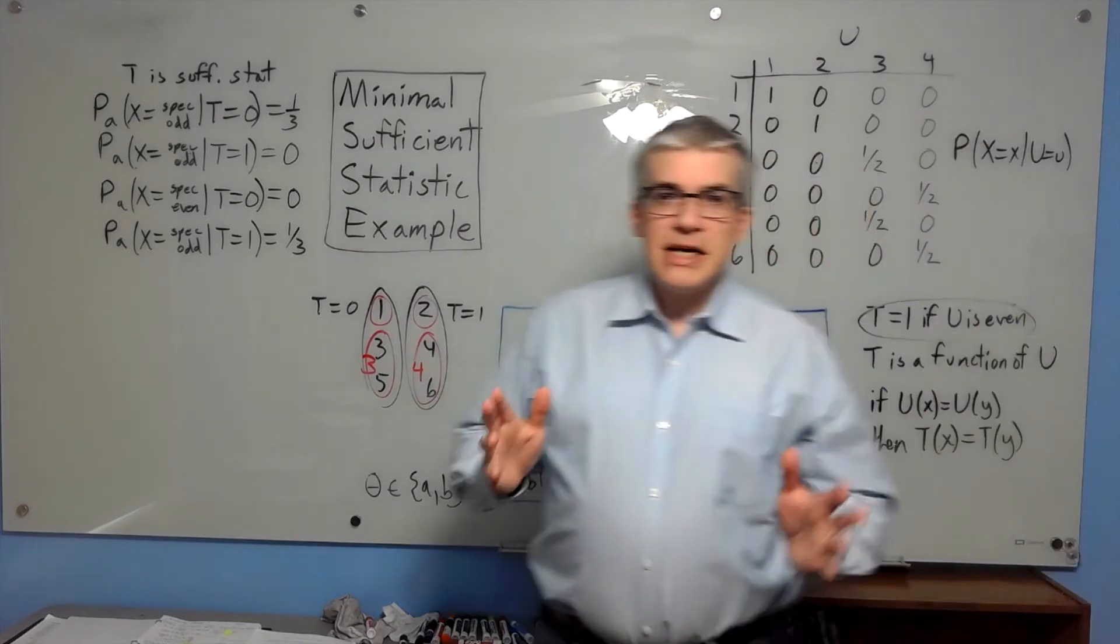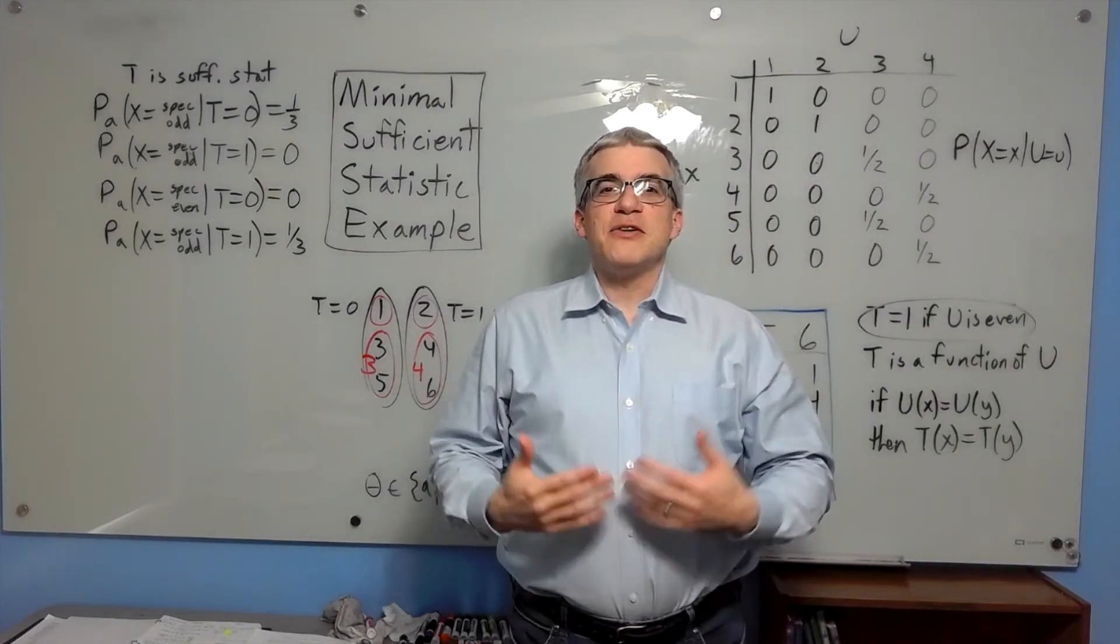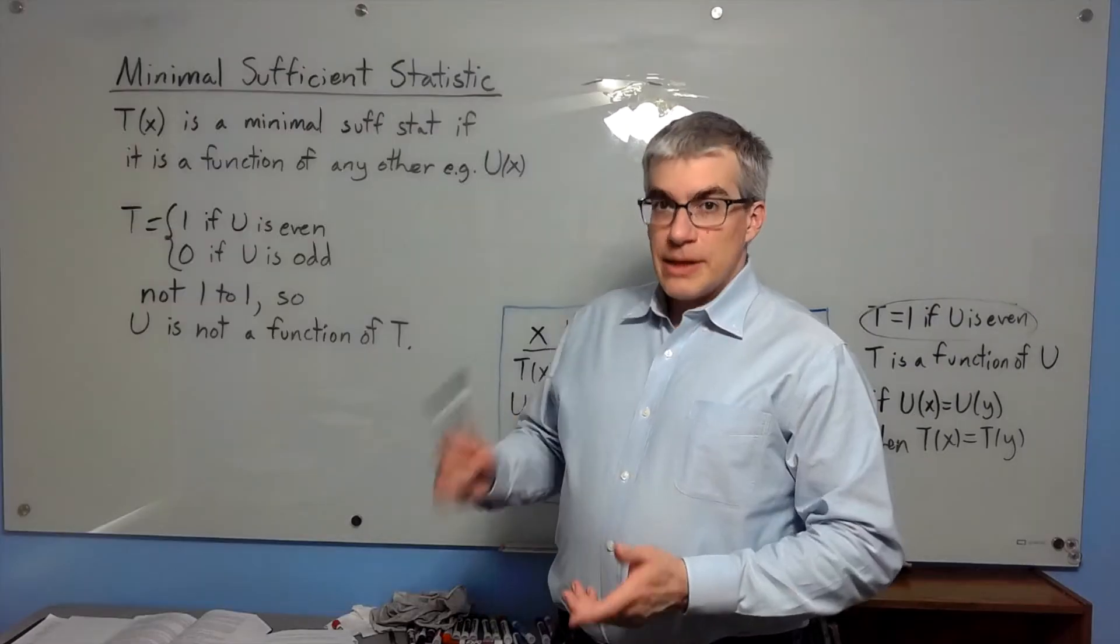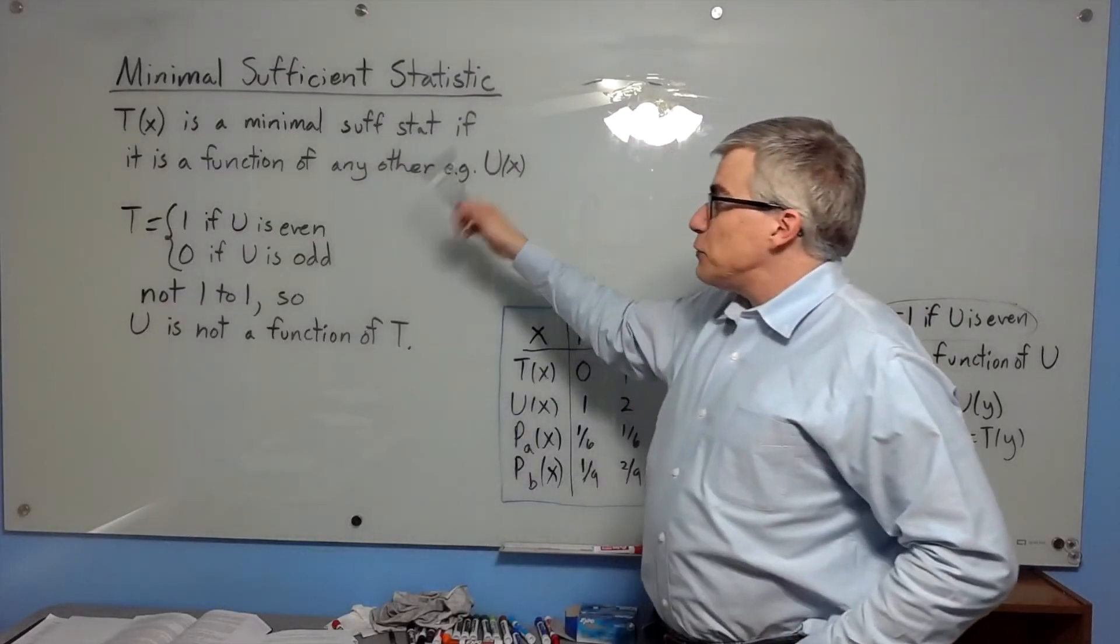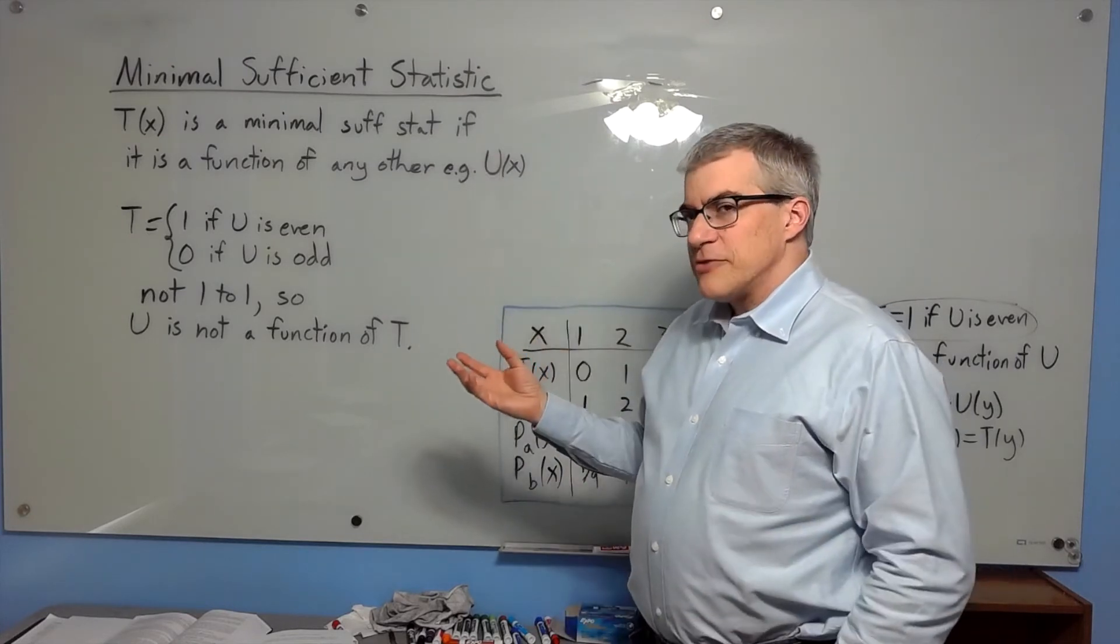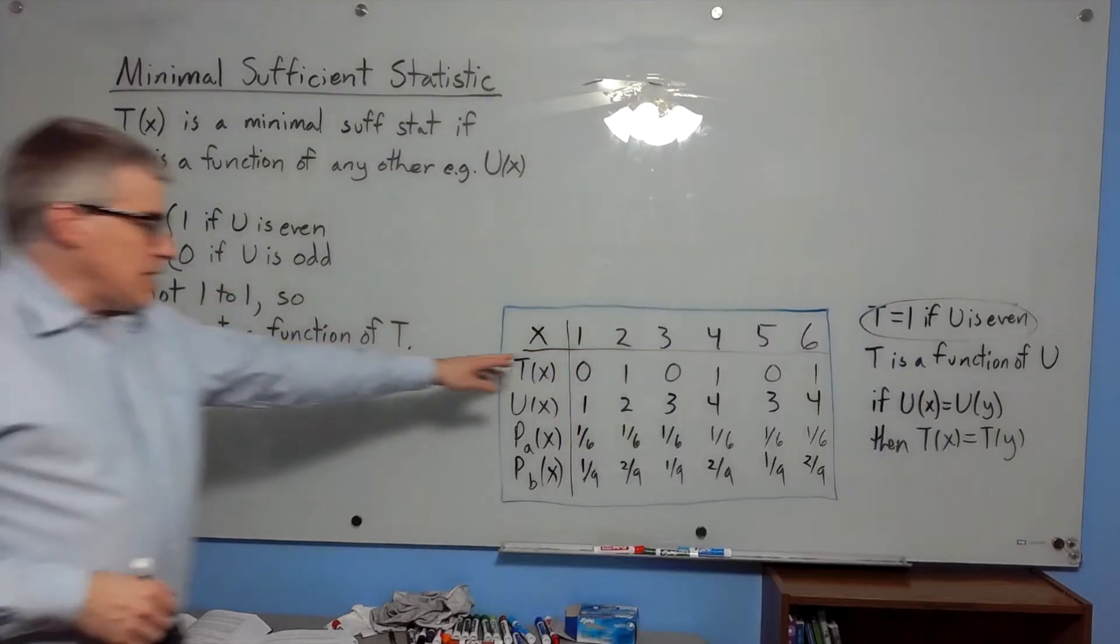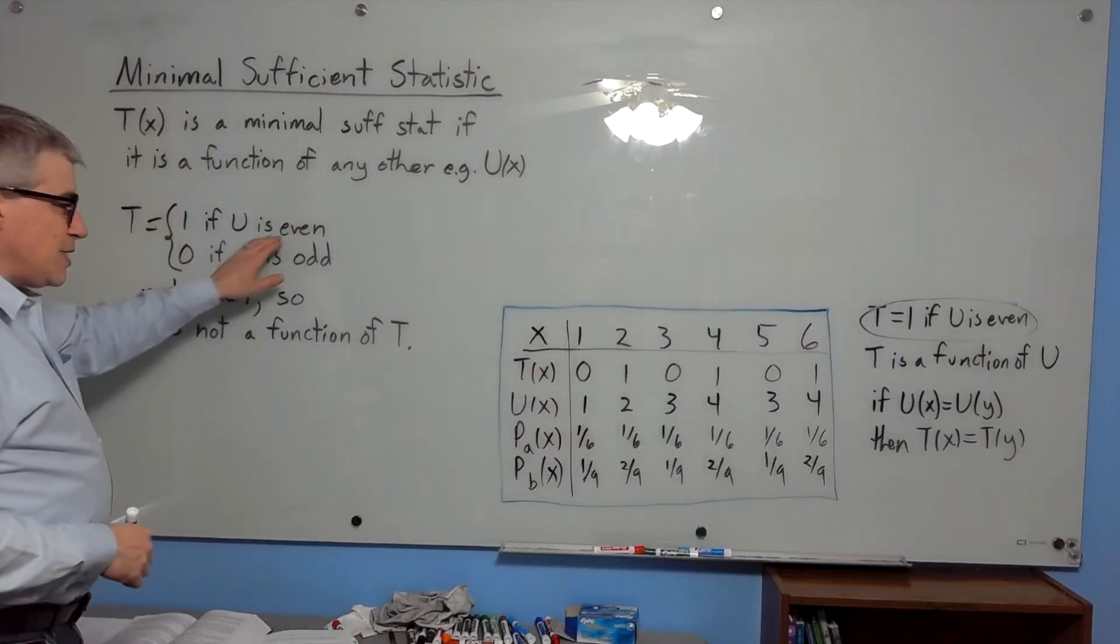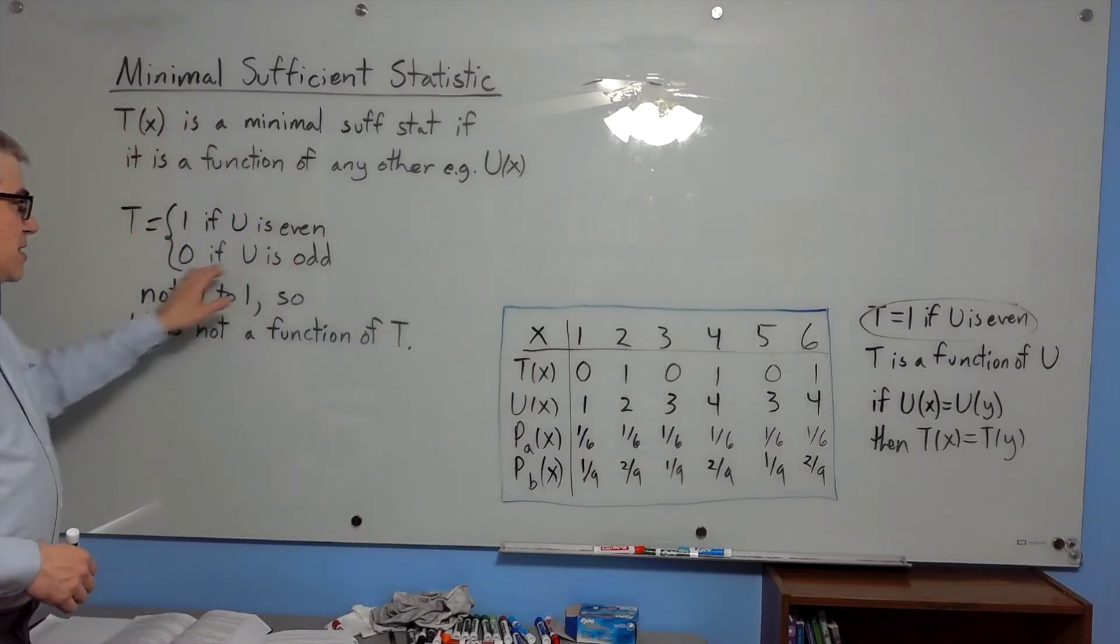Alright, we finally have two sufficient statistics, and we can compare them and see if one of them is minimal. Now for the definition. T is a minimal sufficient statistic if it is a function of any other, for example, u. That seems kind of cryptic on the face of it. But we can check the condition. Given our t and u, whenever u is even, t is 1. And whenever u is odd, t is 0. So t is a function of u.